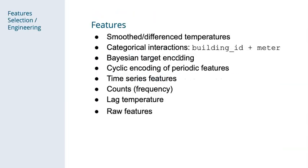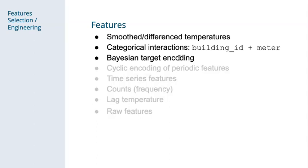We tried a lot of different features in this competition, and I'll discuss the most important ones. We used a Savitzky-Golay filter to smooth and differentiate temperature. We also created categorical interactions — features created by concatenating other features together. And lastly, we used target encoding to map some of the categorical interactions into numerical variables.